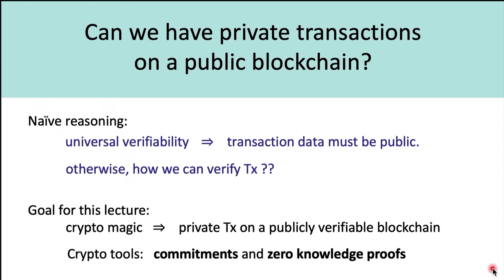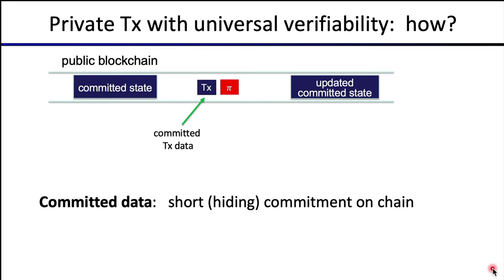To give a hint of where we're headed: we're going to achieve private transactions with universal verifiability by committing to everything, rather than putting everything in the clear on the blockchain. The blockchain will only hold a commitment to the current state — a hiding commitment, which means it reveals nothing about the actual state. This commitment is very short, possibly only 32 bytes, and the public cannot tell what the state is.